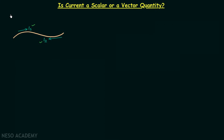In the question it was given that electrons are moving from left to right, and because of this movement of electrons there is a current in the wire equal to 2 milliampere. Using this information we were required to calculate I1 and I2.